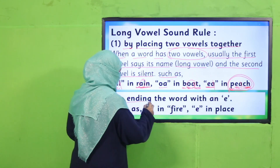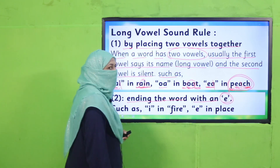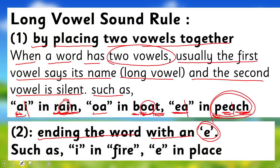The next rule is the Bossy E Rule — words ending with an E. You see there is a vowel in the word and the word ends on E. This bossy E remains silent and makes the previous vowel give its long sound. For example: F-I-V-E — the I gives its long sound: 'five.' Again: P-L-A-C-E — the word ends on E, this bossy E is silent and makes the previous vowel give its long sound: 'place.' There is a consonant blend here — 'place.'